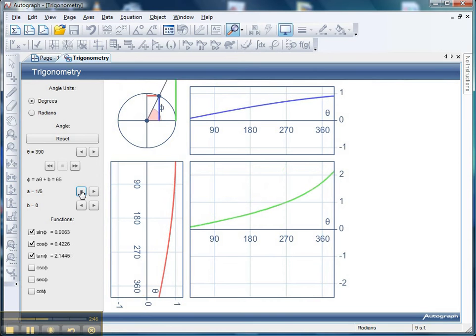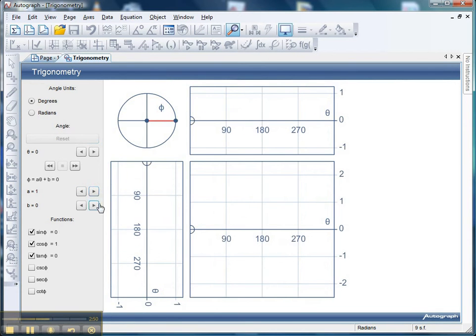There's more to do than that. If I hit reset and pop that value back at 1, I can also change this B value. If I change that to say 45, that's quite a nice one.